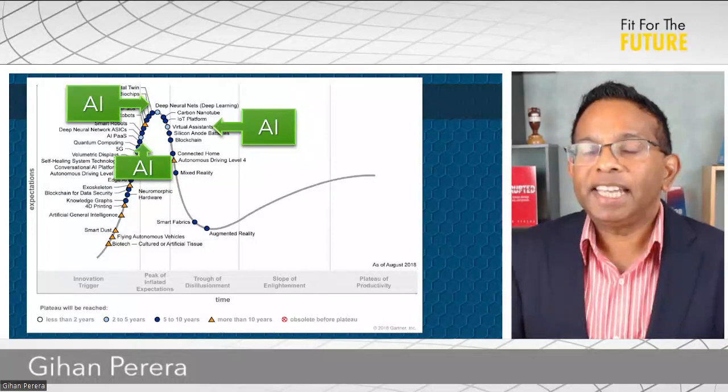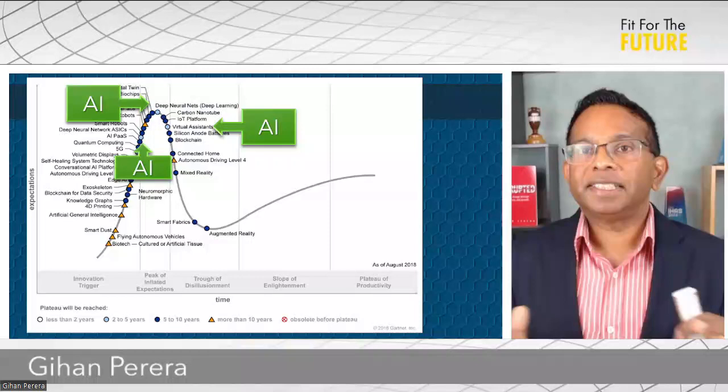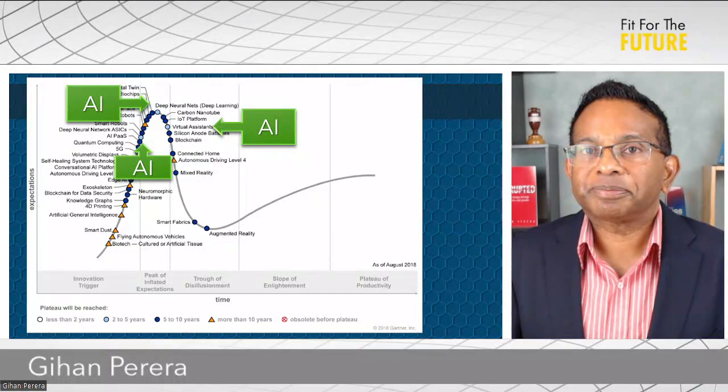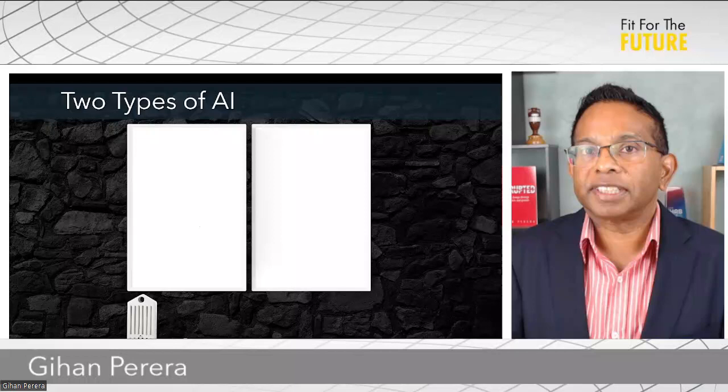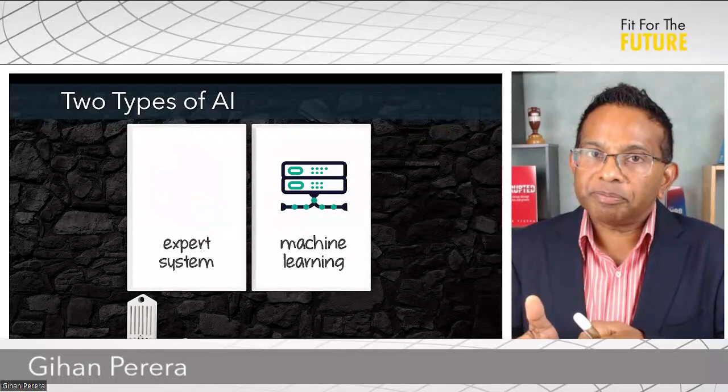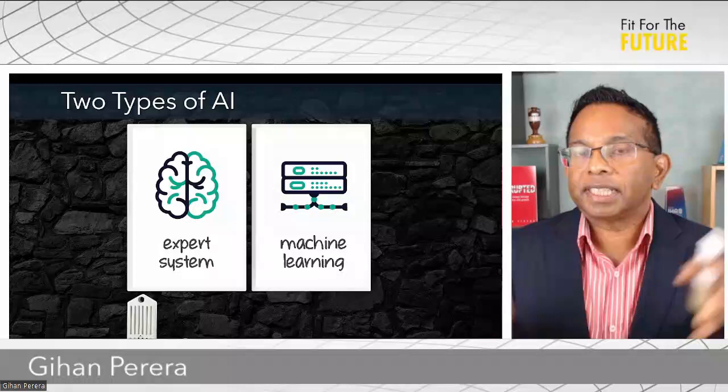Now we know AI is huge, and it's because ChatGPT has made it mainstream. Previously, AI was happening behind the scenes — lots of people knew about it, it was happening in many industries, but it was behind the scenes. ChatGPT has shown everybody how powerful it is. There are actually two kinds of artificial intelligence, and it's useful to understand these two things: one is machine learning, and the other is expert systems.